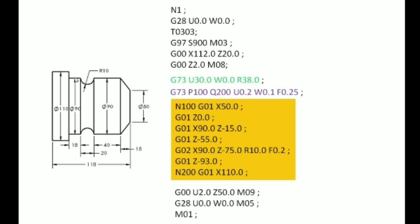We have to create the diameter of the tool and we will create the 110 diameter to the tool. We will create a tool to approach the profile. We will run the pattern repeating cycle. G00 U2.0 Z50 M09 — relief tool retract. We will complete this cycle and use X12M to complete this point.